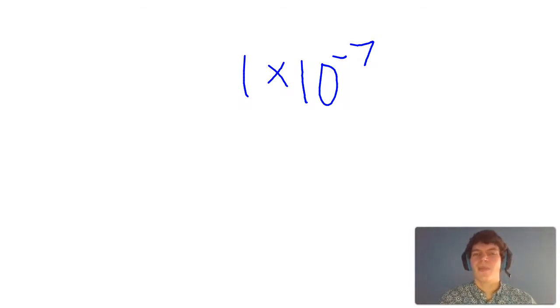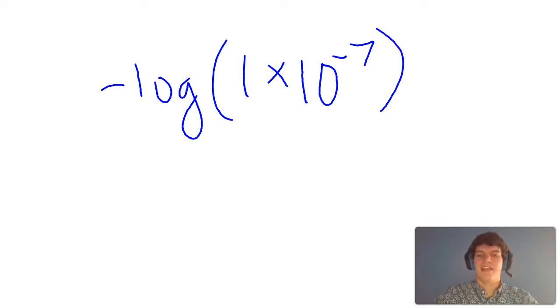And to find the pOH, we can just take the negative log of this value. And that's going to be equal to 7. And as you should know,